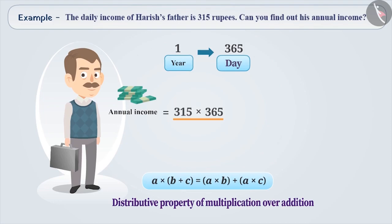That is, 315 into 365 can be written as 315 into (300 plus 60 plus 5). Here, how do we apply the distributive property of multiplication over addition? Think for a while.